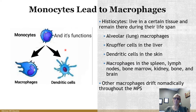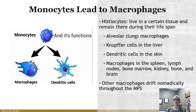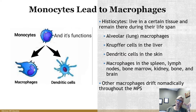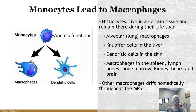Monocytes differentiate into macrophages when they migrate out of the bloodstream — they also differentiate into dendritic cells, which are named because they look like nervous system cells with dendrites. When monocytes leave the bloodstream, they change significantly: they get larger and start to grow lysosomes and other organelles they didn't have before. About 3% to 7% of your circulating white blood cells are monocytes, which may migrate into body tissues to become macrophages.